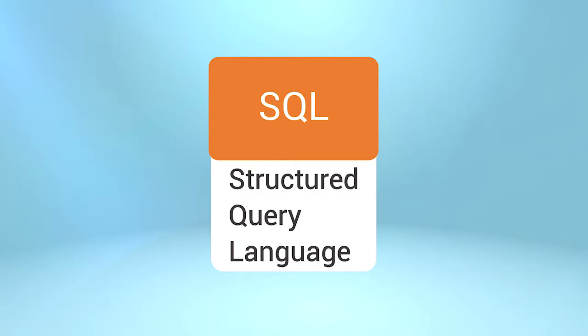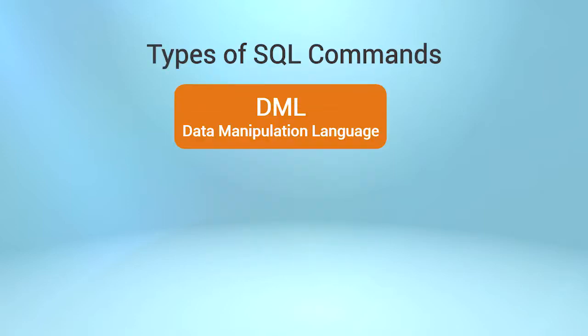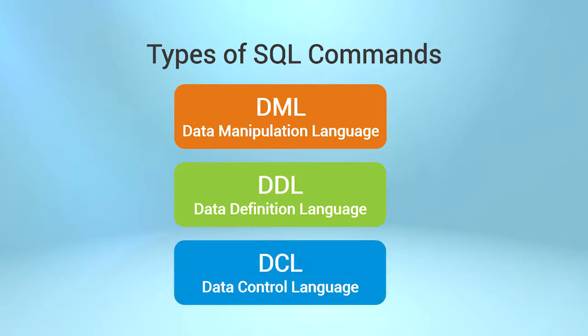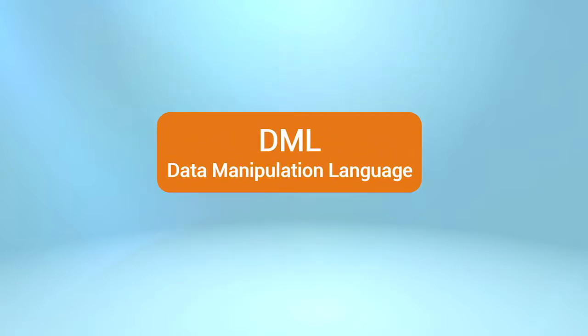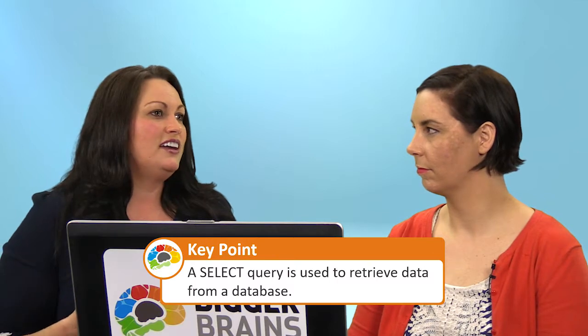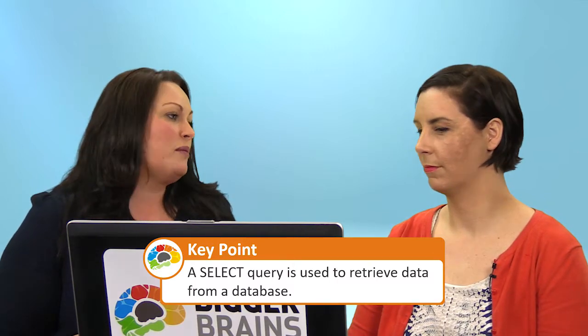There are different parts of SQL. You have DML, which is Data Manipulation Language. Then you have DDL, which is Data Definition Language. And then you have DCL, which would be Data Control Language. Now in this course, we're not going to worry about all of that. We're going to focus on DML, which will allow us to write a select query — which is basically just retrieving data from a database. We're not going to learn how to create tables, change properties, insert data, and that type of thing.